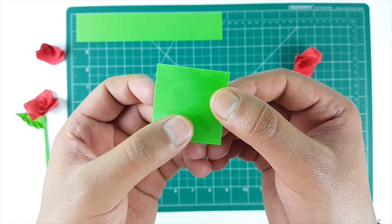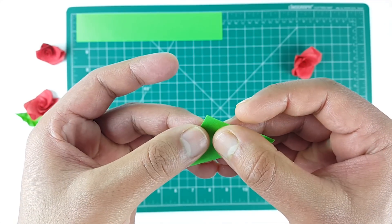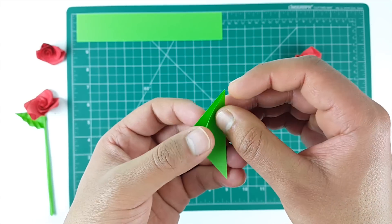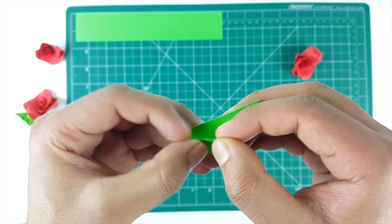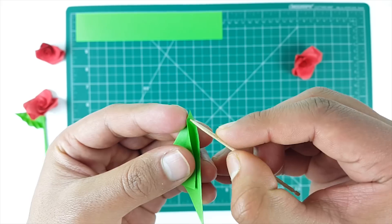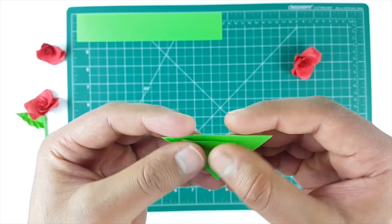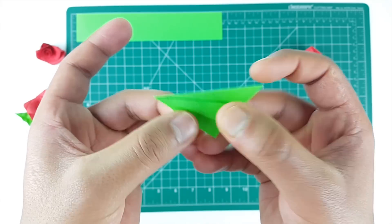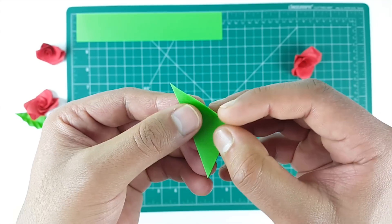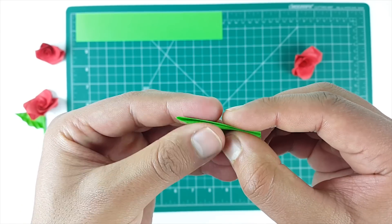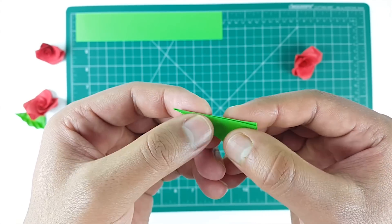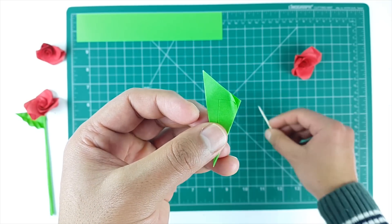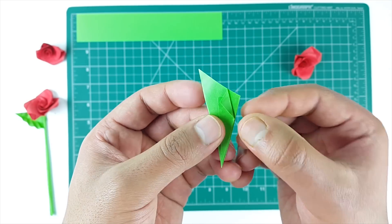So let's make the leaf now. Fold the paper along the diagonal. Now make a small fold like this. Similarly for the other side. Now make a fold like this for both sides.